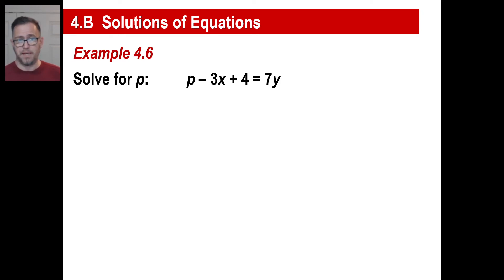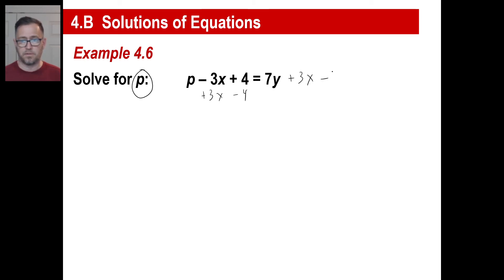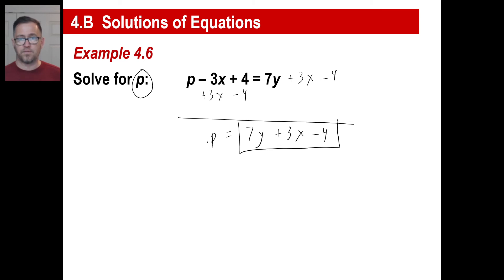When they say solve for p and give you an equation with a bunch of variables, to solve for p means we get everything else on the other side and get p by itself. The way to get rid of negative 3x is to add 3x, and to get rid of the 4 is to subtract 4. Do exactly the same thing to both sides. So p is now by itself: p equals 7y plus 3x minus 4. What is the numerical value of p? I don't know — that depends on y and x. But we've solved for p.